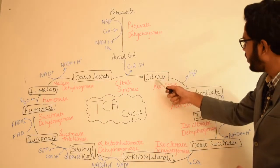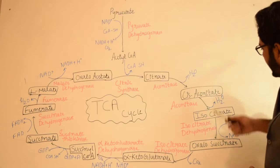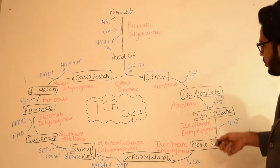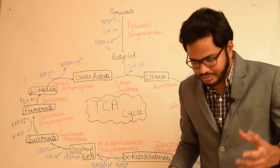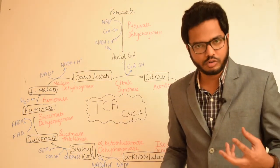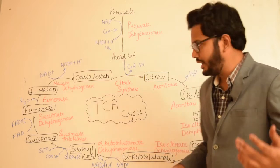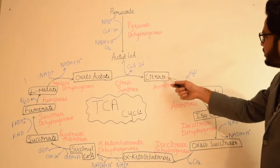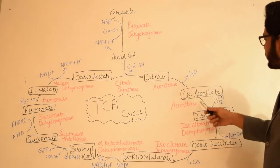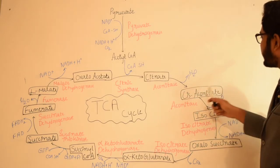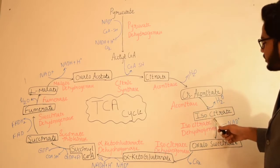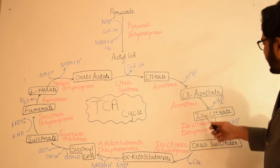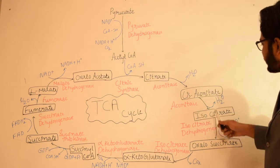Once citrate is formed, there is also formation of isocitrate. These compounds contain three carboxylic groups, which is why this cycle is called the tricarboxylic acid cycle. Citrate gives up water in the presence of the enzyme aconitase, leading to formation of cis-aconitate, which is then converted to isocitrate with release of water, again in the presence of aconitase.